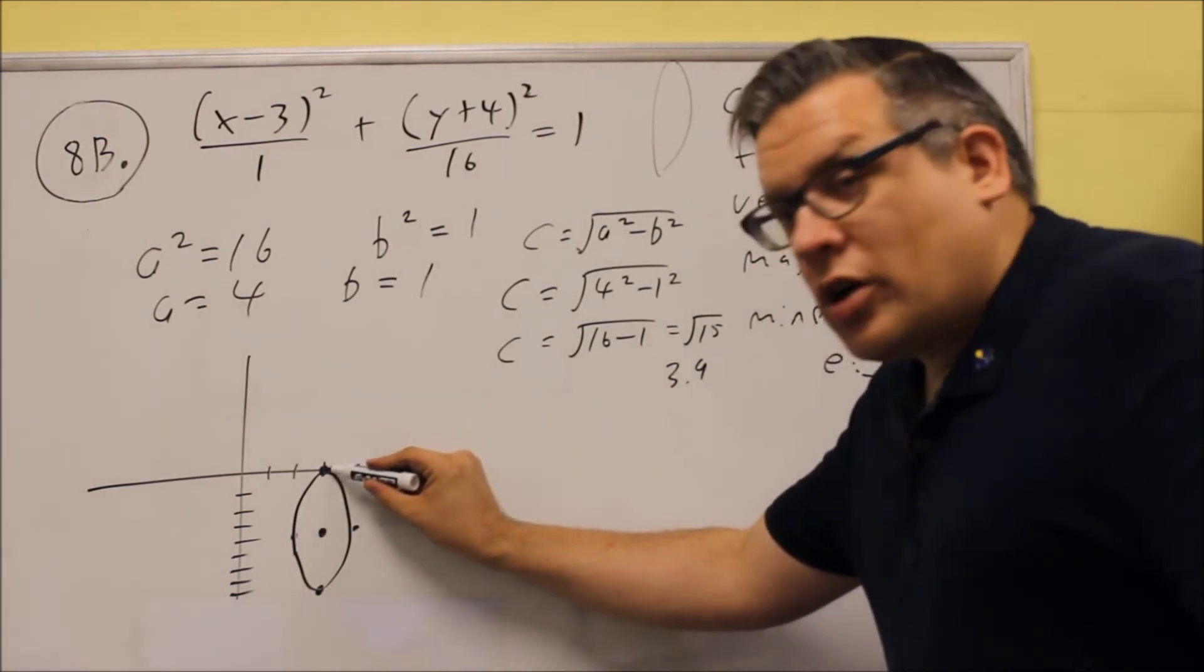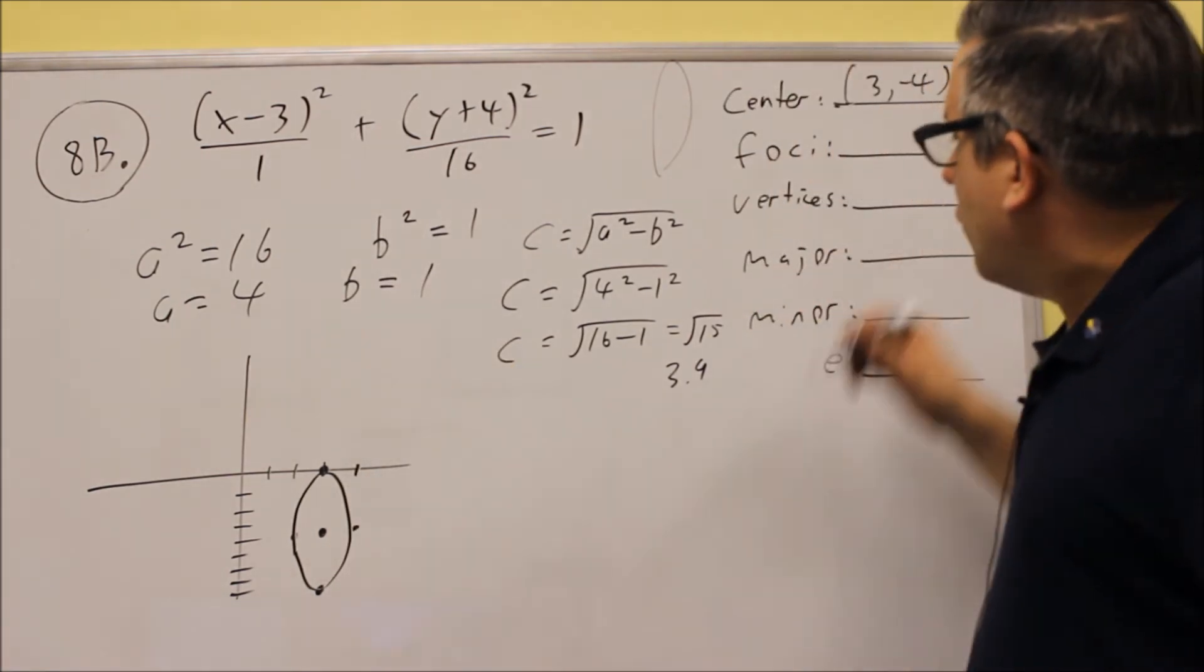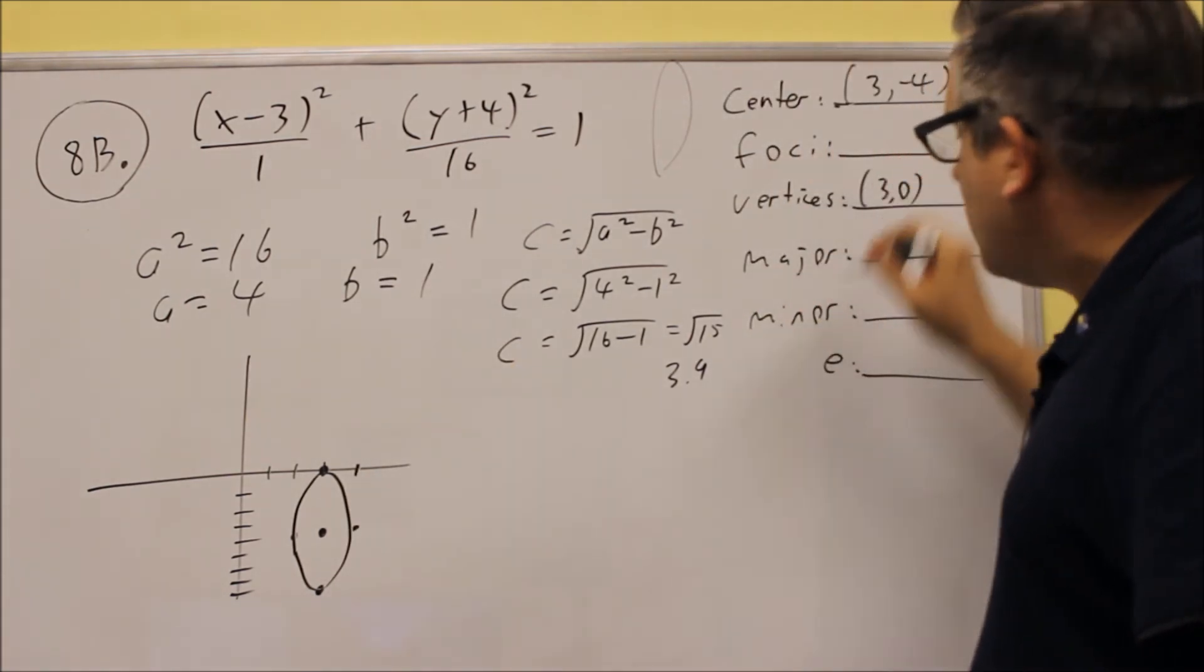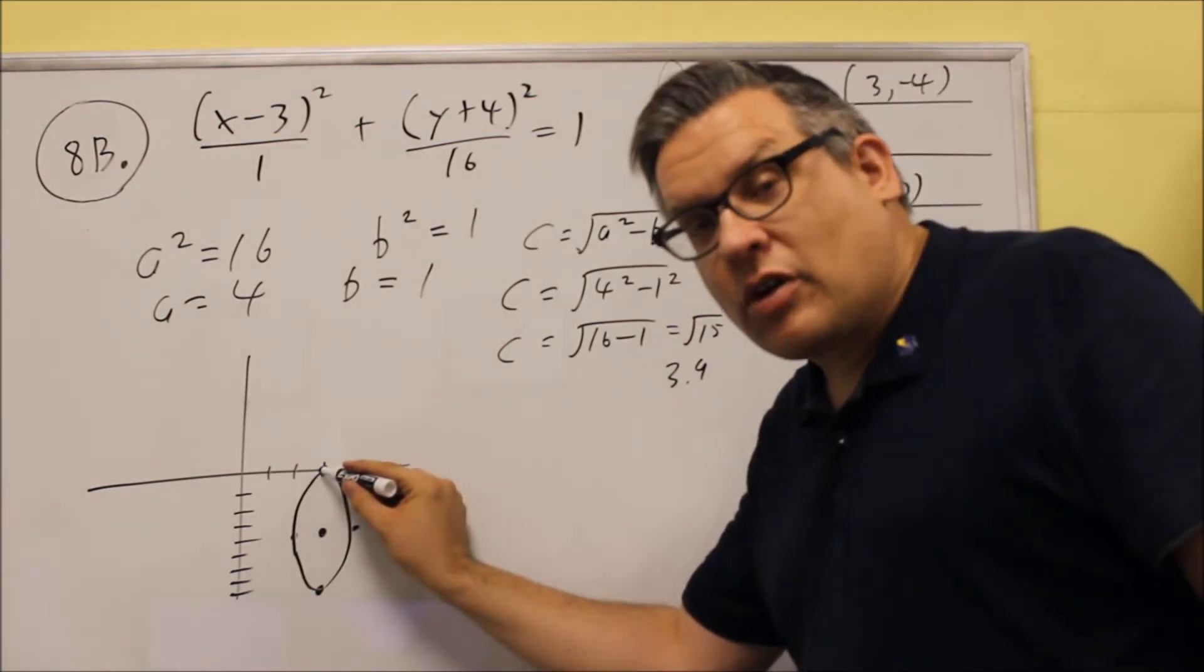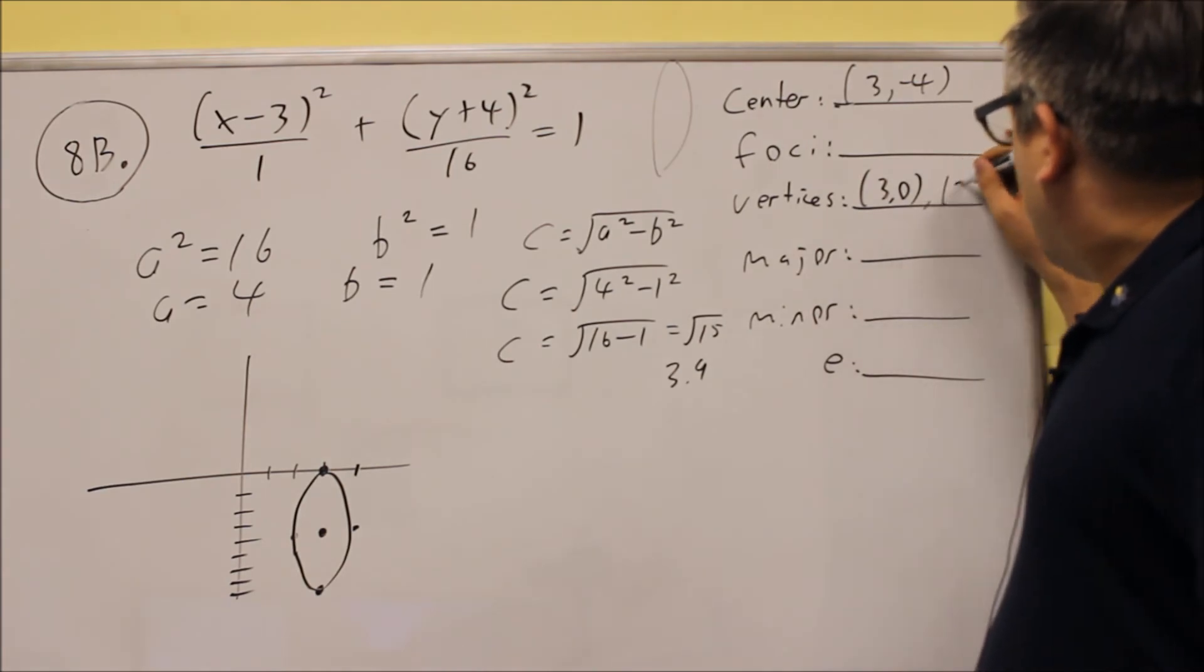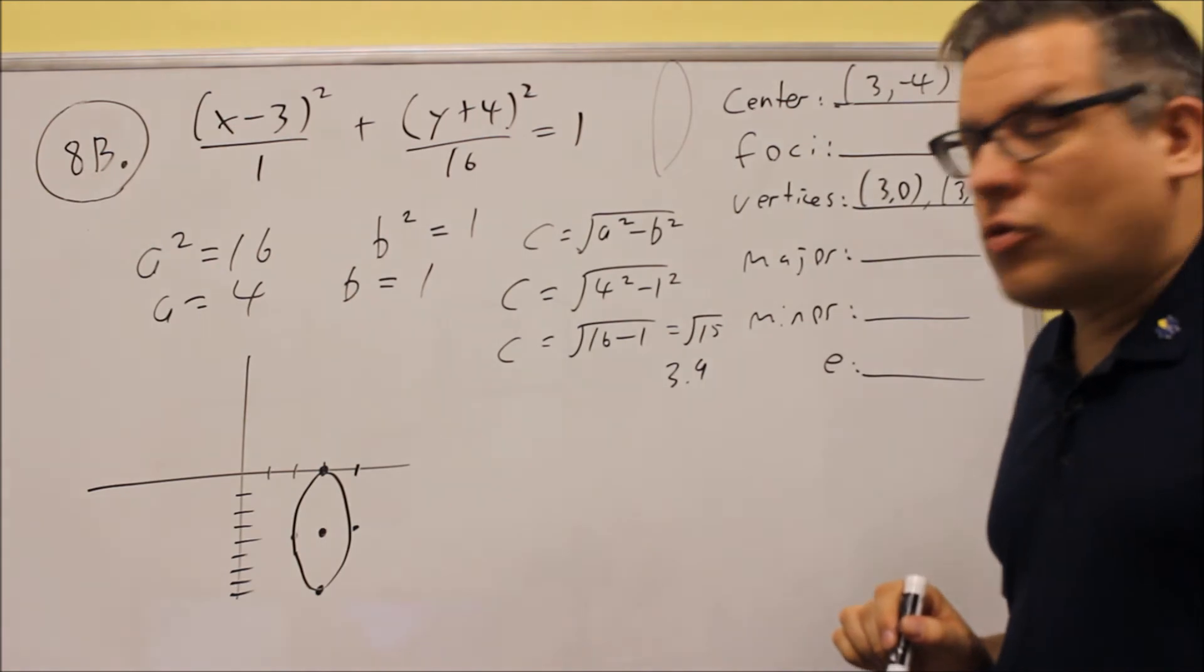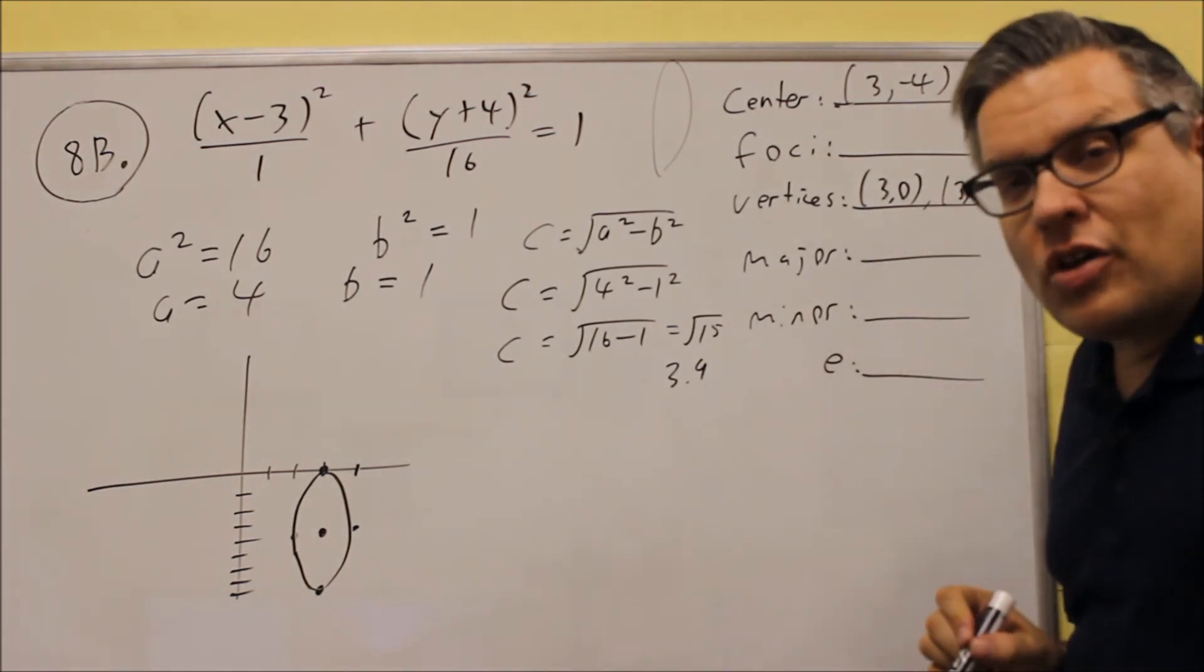The vertices are this one and this one at the major axis. That's where it's going to be at. So for the vertices, we have 3, 0. We can read that directly off the graph. And also the other one's going to be at 3, negative 8. So 3, negative 8 is the other one. So we have those two other vertices.